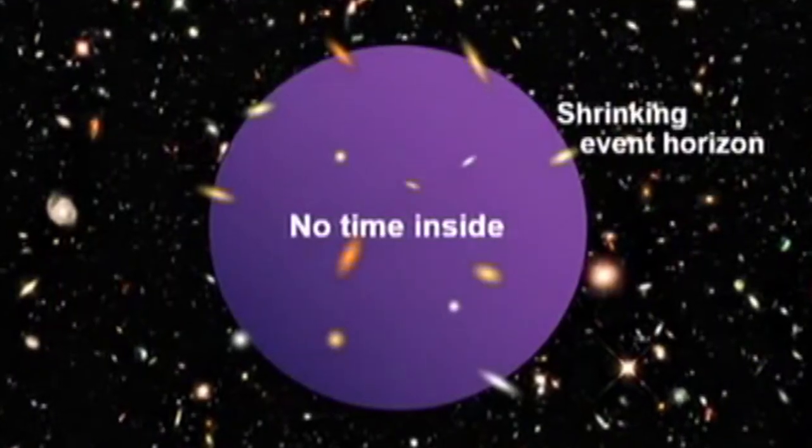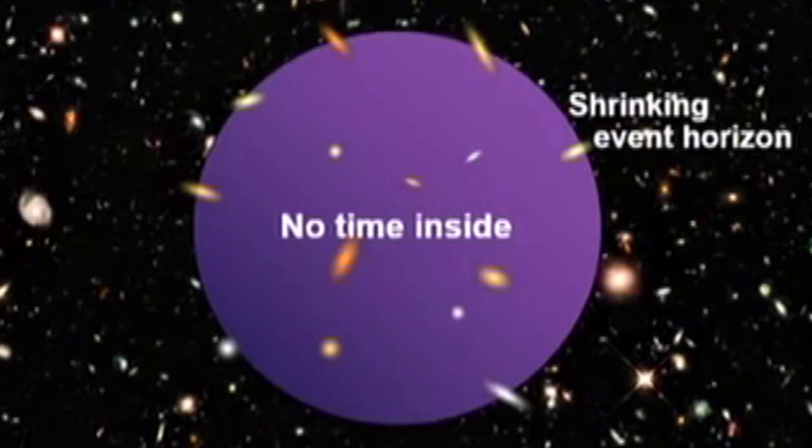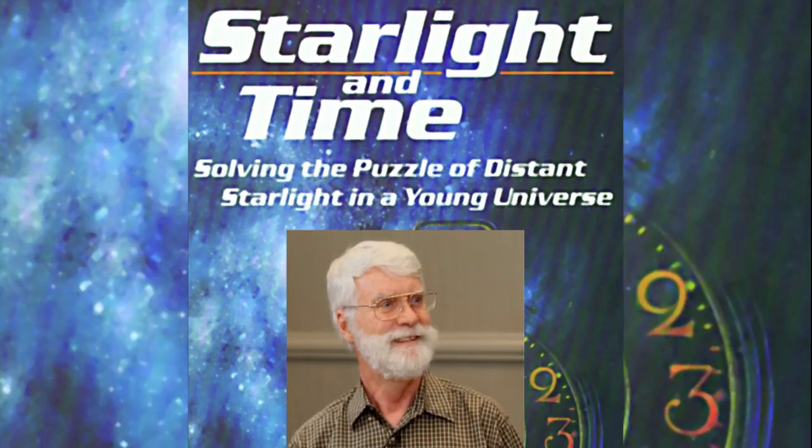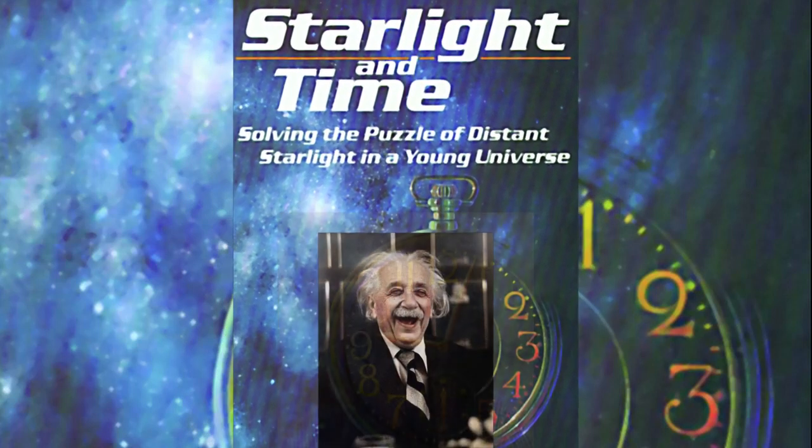Humphreys claims that this is why we see distant starlight from billions of light-years away on an Earth that is only around 6,000 years old. This is the scenario that Humphreys presents and claims is 100% consistent with Einstein's theories of relativity.